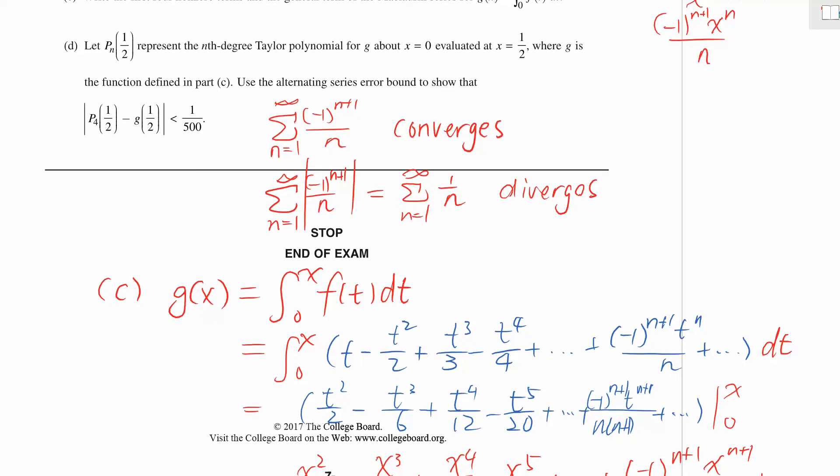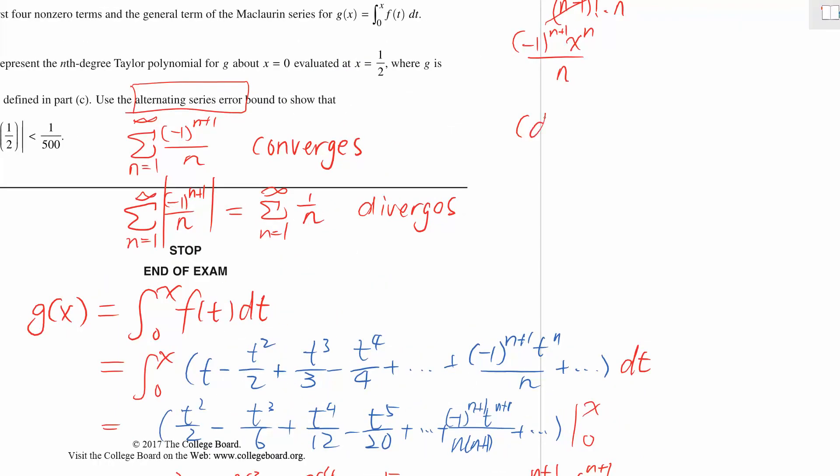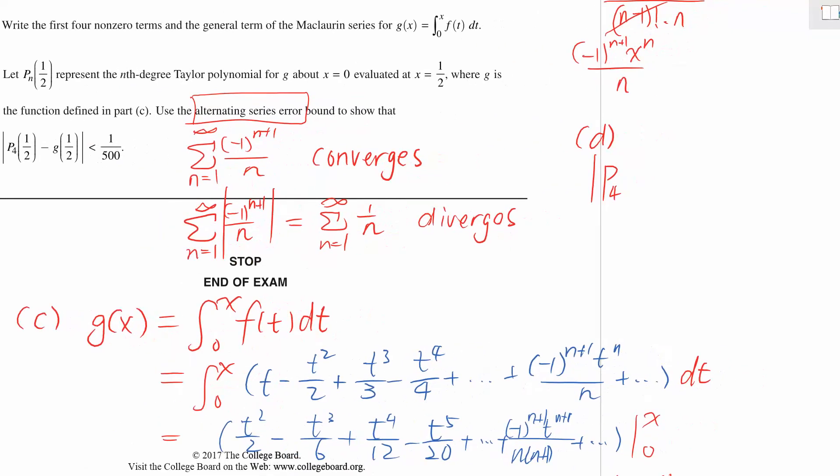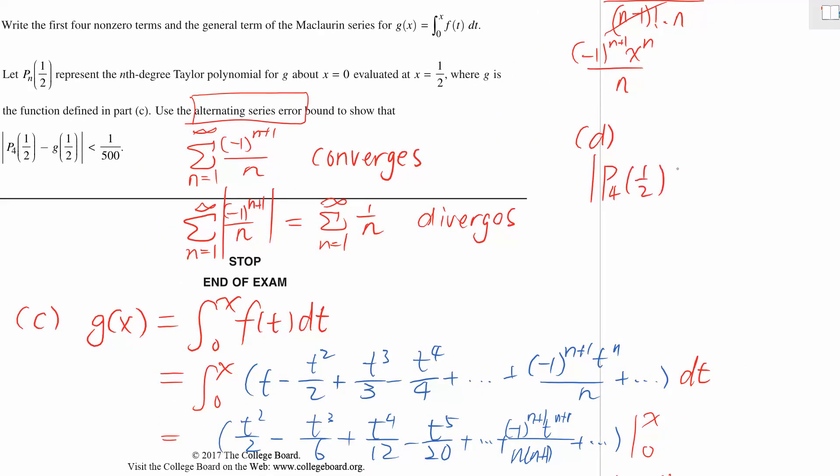Let's get back to part d. We have p_n represent the nth degree Taylor polynomial for g about x equals 0, and we have this alternating series error bound to be less than 1/100. I'm going to start here. We want to find the alternating series error for p_4, which means it's fourth degree.